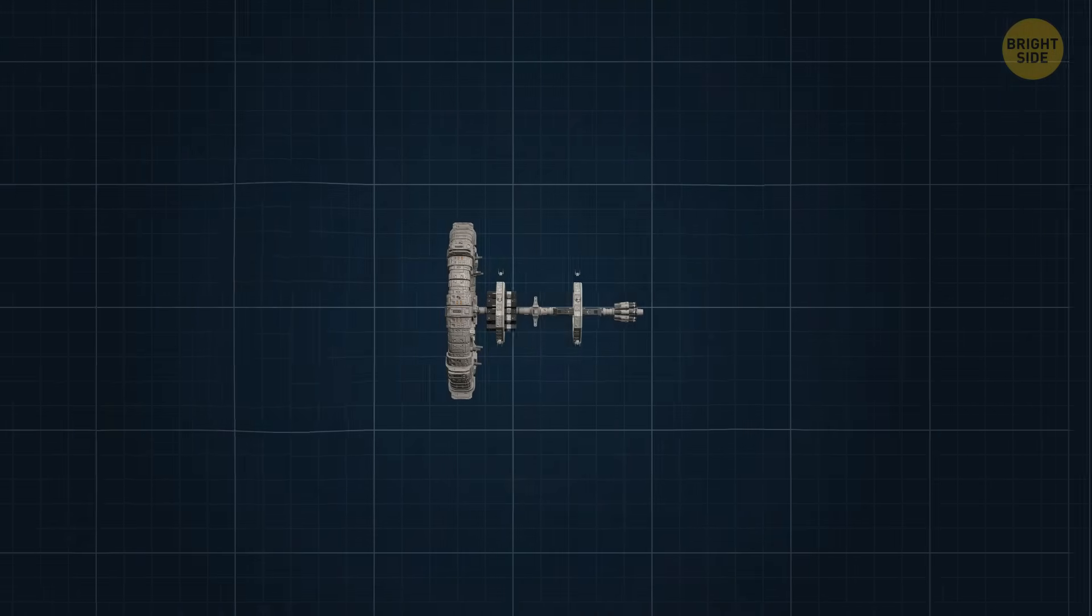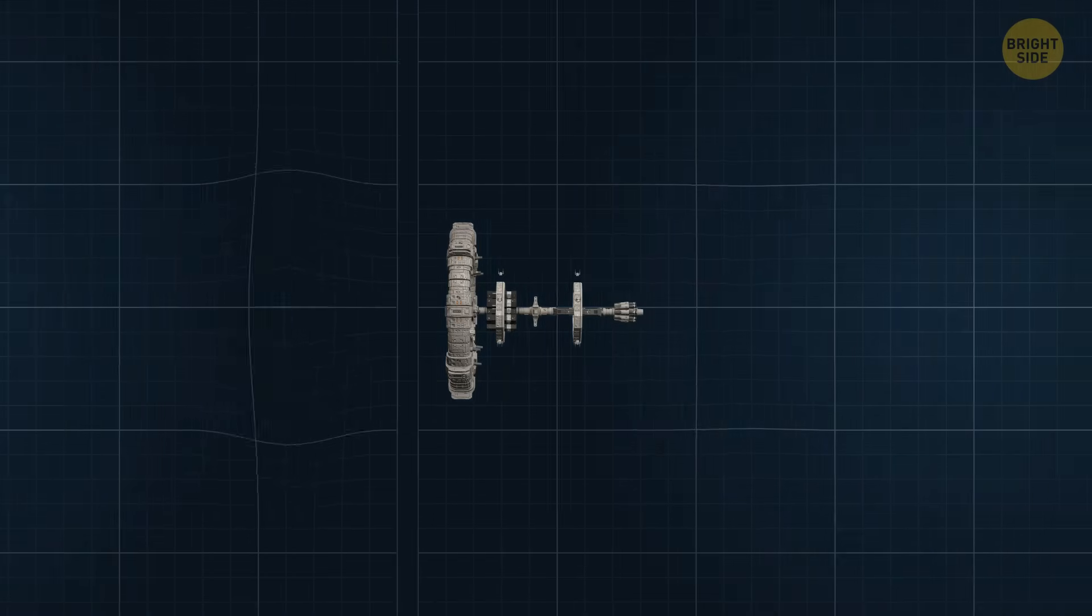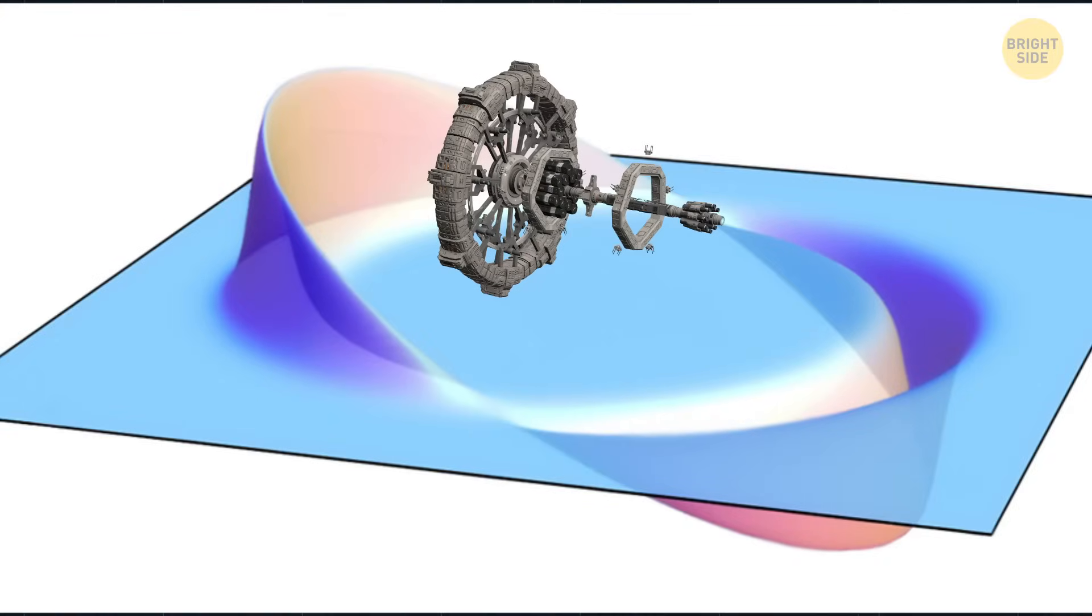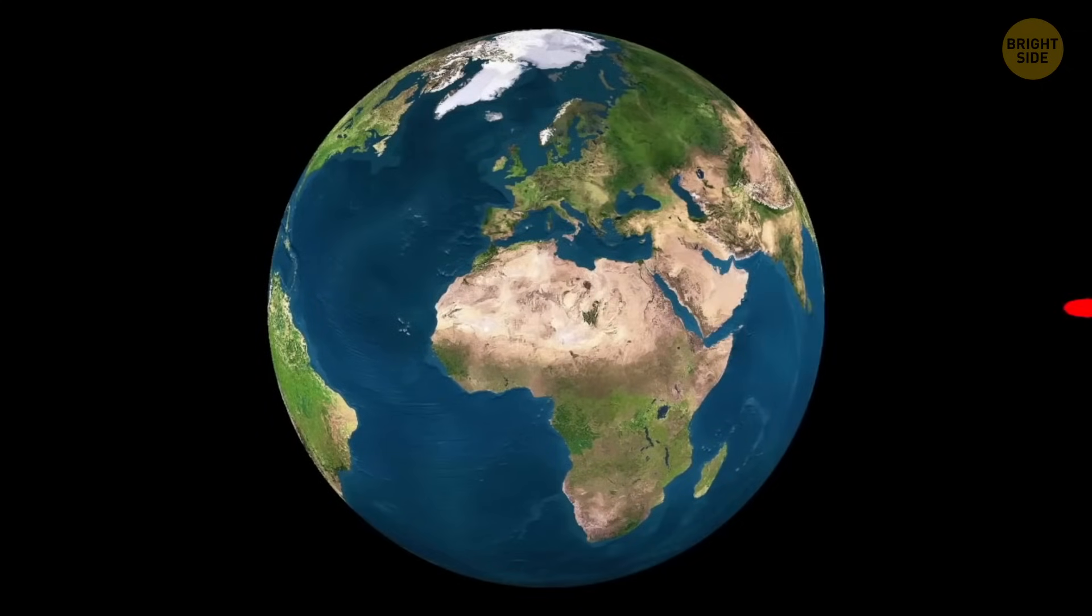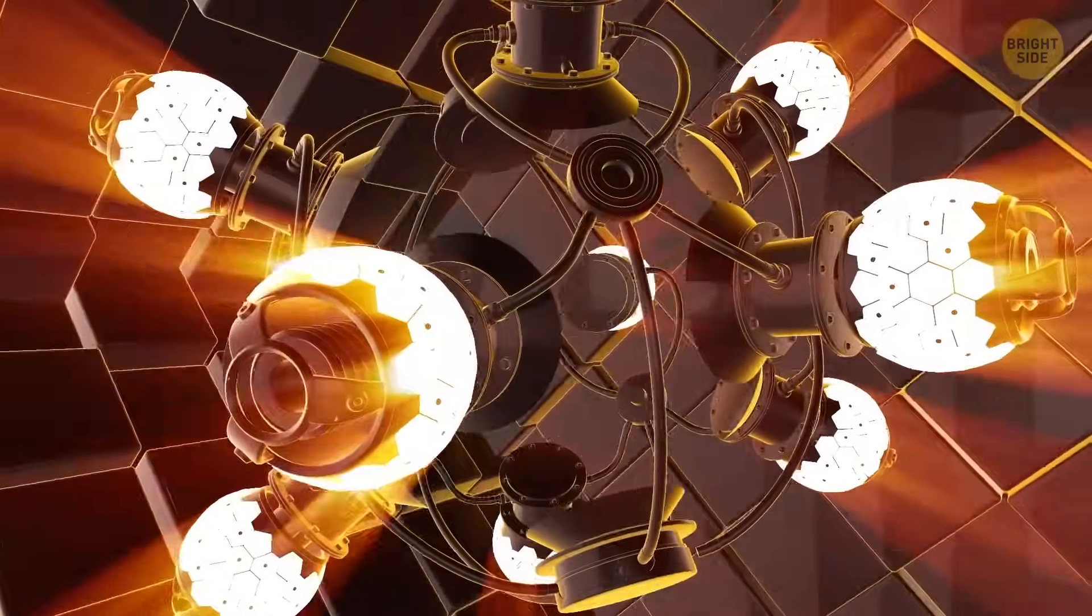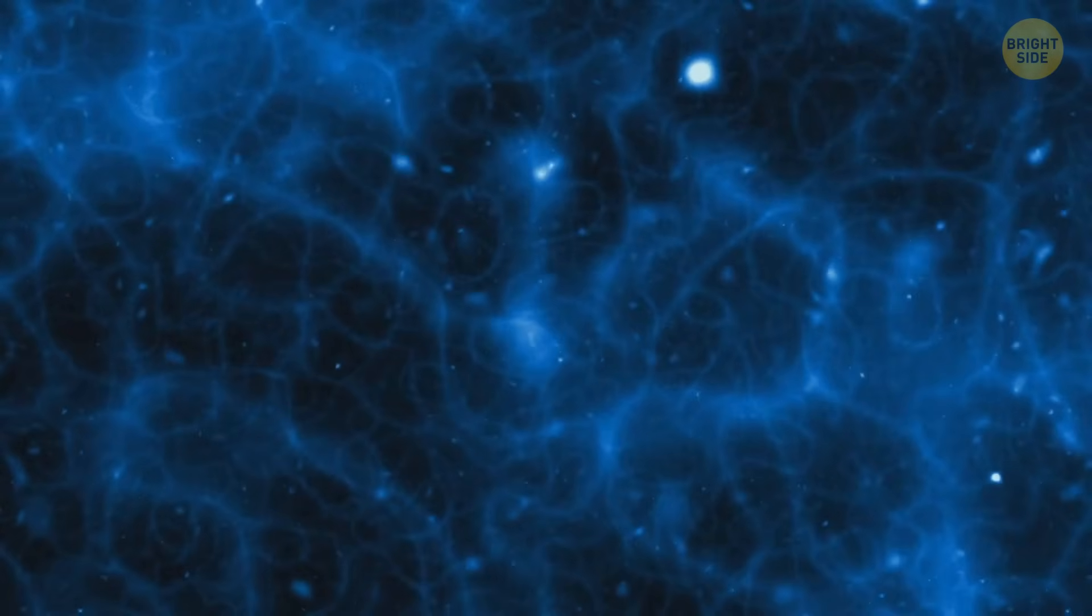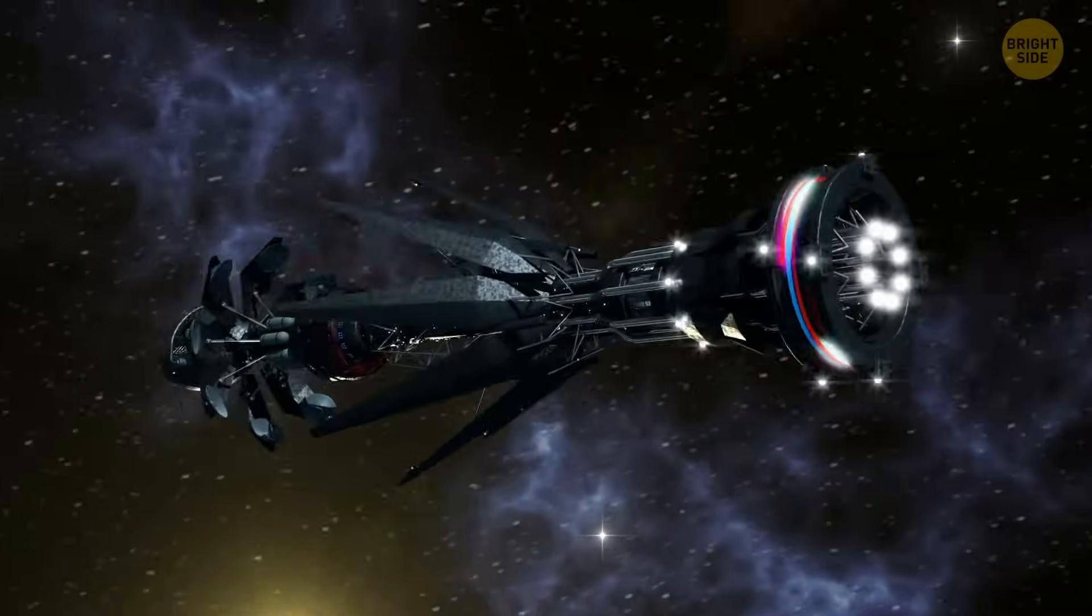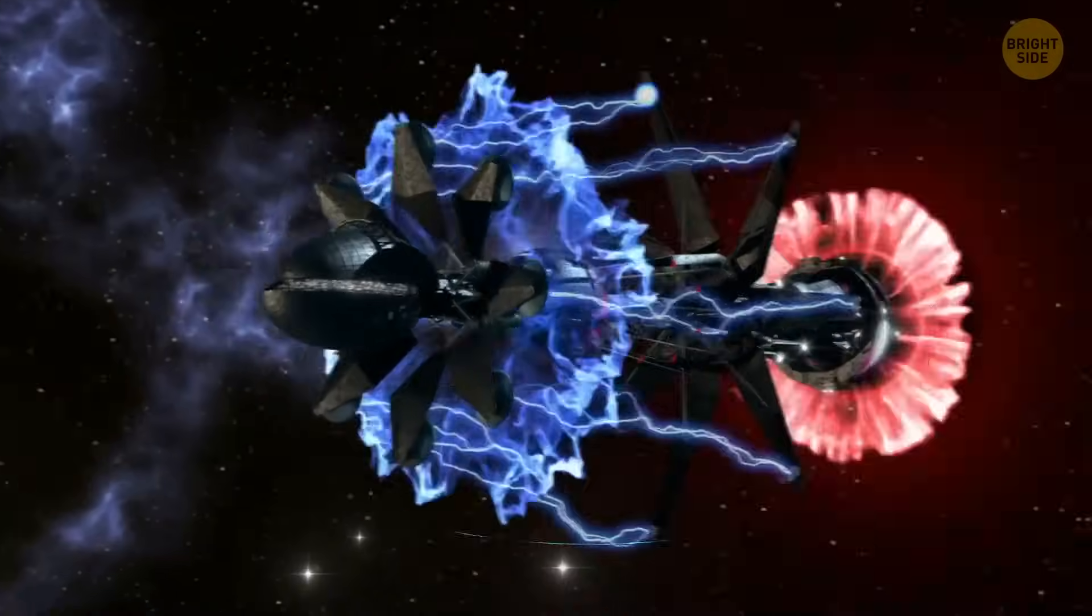Alcubierre described it like this. Space-time expands behind the spaceship and contracts in front, creating a sort of wave that carries the ship along faster than light, at least from the perspective of someone outside the warped region. The Alcubierre Drive, in theory, would need an insane amount of energy, probably more than exists in the entire universe. This energy would allow us to twist and squeeze space-time in front of the spacecraft and create a bubble for travel.